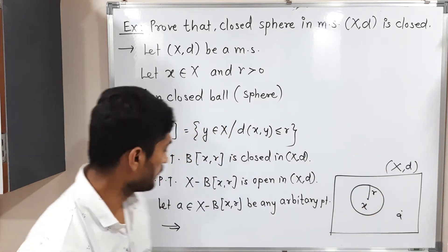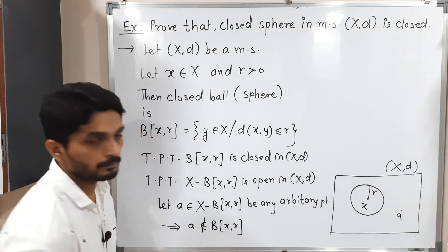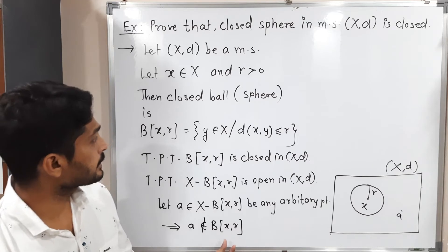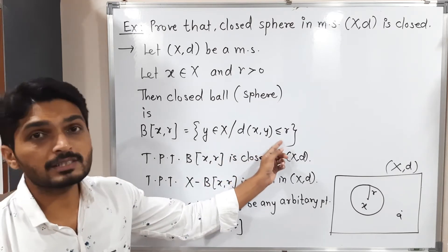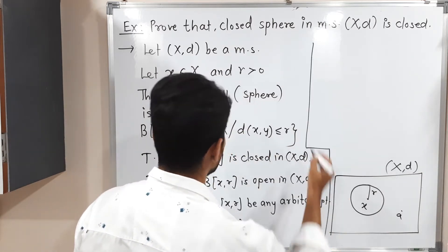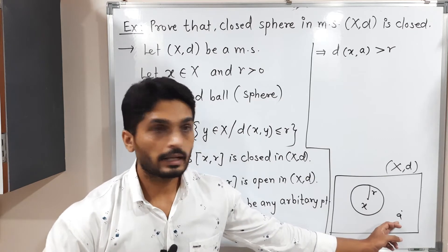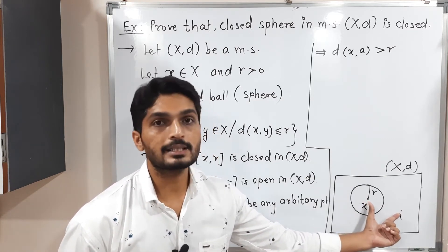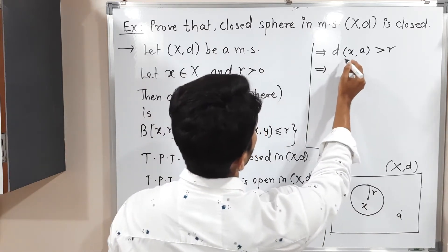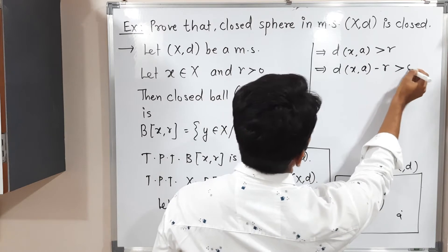A lies in the complement of this ball — that means A does not belong to this closed ball. So it will not satisfy the condition d(X, Y) ≤ R. It means the distance of X and A is greater than R. Since A lies outside this ball, we shift R to the other side: d(X, A) minus R is greater than 0.